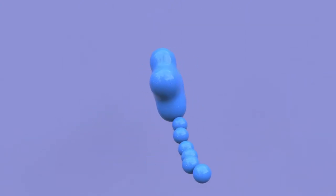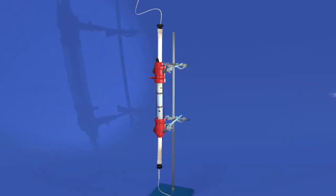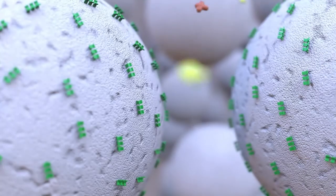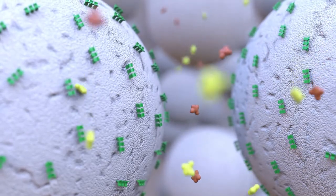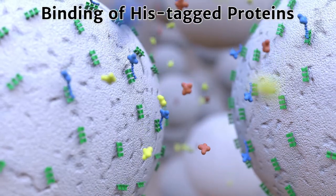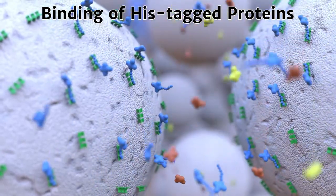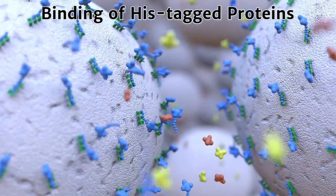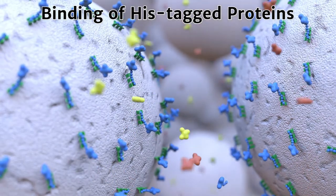When resins comprised of beads with nickel bound to a nitrilo-triacetate molecule are used in chromatography columns, they selectively bind his tag proteins. Because most proteins lack six histidine residues in a row, they don't bind and pass through the column.